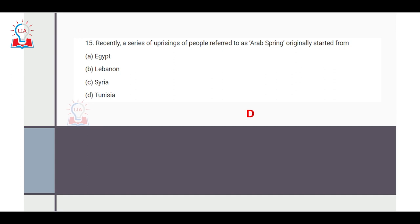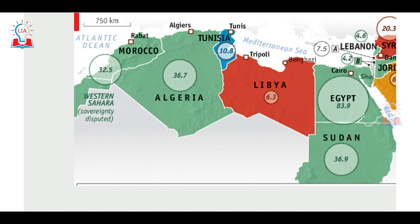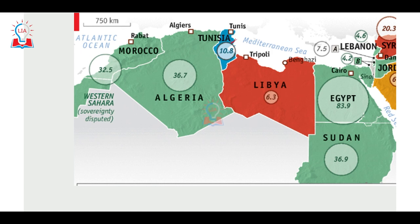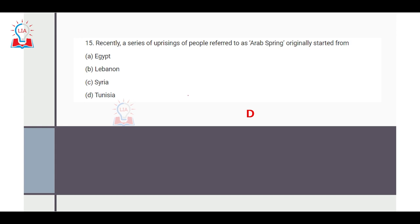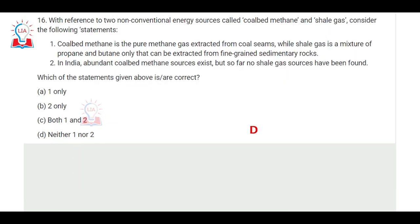The next question is about the Arab Spring — a series of uprisings — asking where it originated. The options are Lebanon, Syria, or Tunisia. The Arab Spring was a revolutionary movement across the Arabian region, where people sought to overthrow what they deemed dictatorial regimes. It first began in Tunisia, a small country on the Mediterranean coast, and then spread to Algeria, Morocco, Libya, Egypt, and to some extent Saudi Arabia. The correct answer is Tunisia.